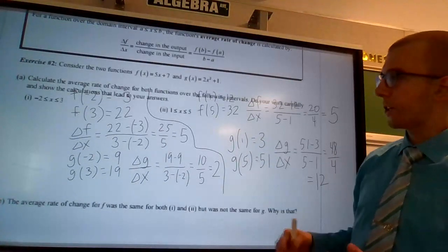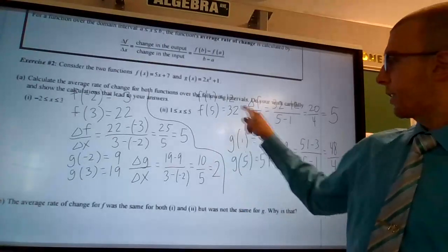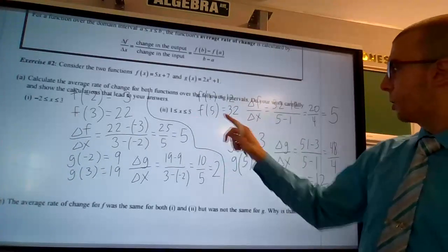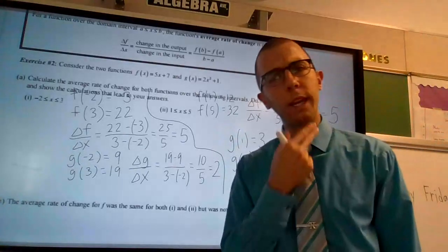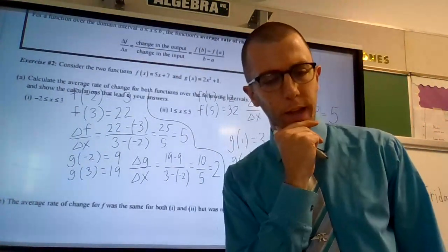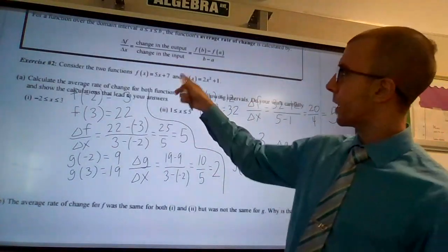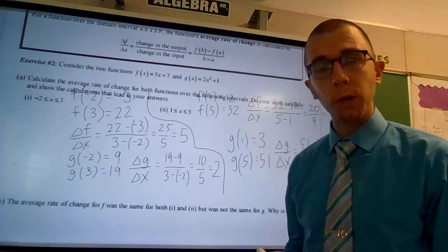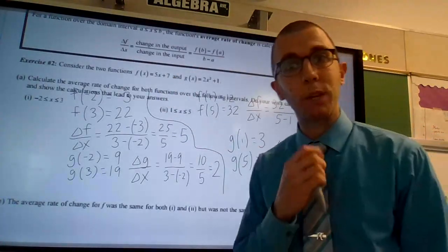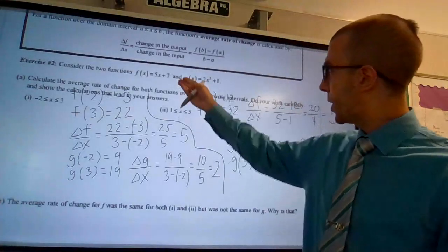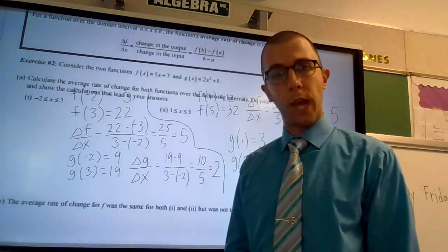Our next question relates directly to that. It says, the average rate of change for f was the same in both 1 and 2 here, but it was not the same for g. So why is that? Why is that? Well, notice what kinds of functions those were that we were working with. F of x equals 5x plus 7 is what kind of function? And g of x equals 2x squared plus 1. Again, what kind of function is that?